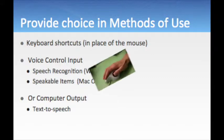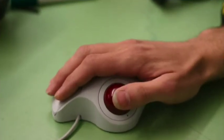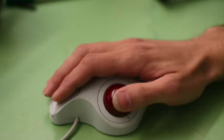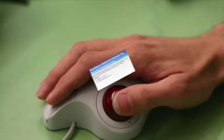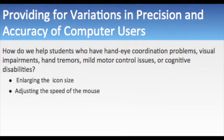The second item involves accommodating left and right-handed users. This is done through mouse properties. The third item is providing for variations in precision and accuracy of computer users. This includes helping students who have hand-eye coordination problems, visual impairments, hand tremors, mild motor control issues, or cognitive disabilities. This can be accomplished by enlarging the icon size or adjusting the speed of the mouse.